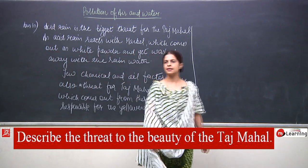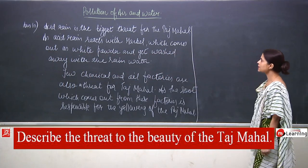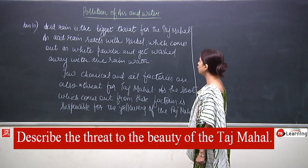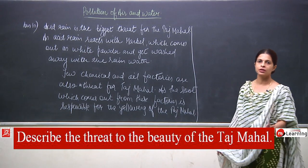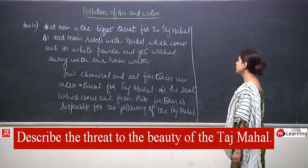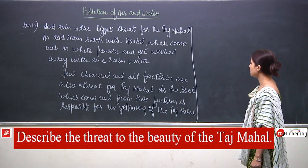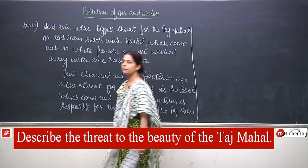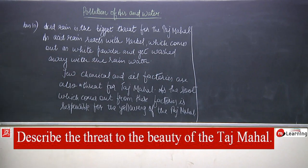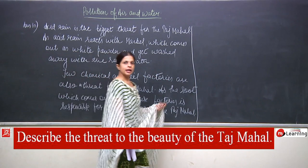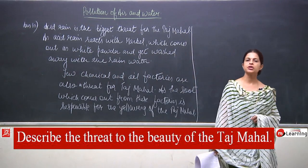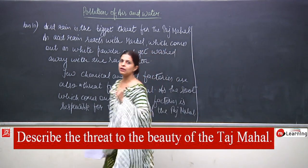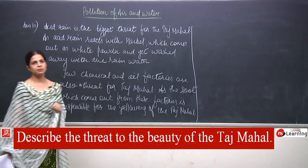Reading the answer: acid rain is the biggest threat for the Taj Mahal as acid rain reacts with marble, which comes out as white powder and gets washed away with the rainwater. Few chemical and oil factories are also a threat as their soot causes yellowing. You should also write a definition of acid rain and two to three more lines about its effects before reaching the Taj Mahal effects.